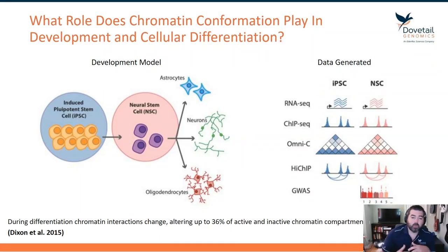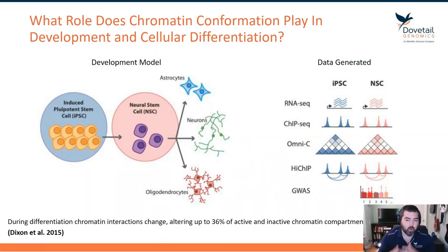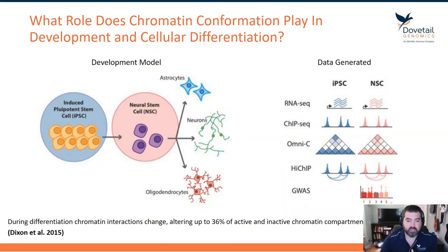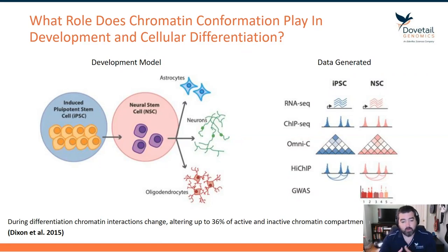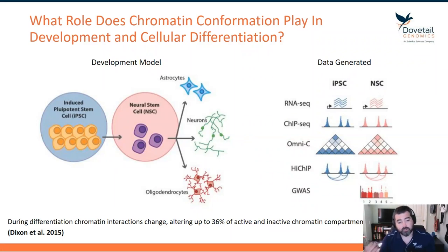The question we really want to drive at today is: what role does chromatin conformation play in development and cellular differentiation? To that end, we have a model where we have induced pluripotent stem cells, and we've forced those iPSC cells to become neuronal stem cells, or NSCs.